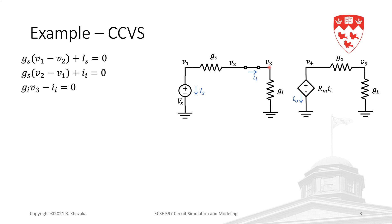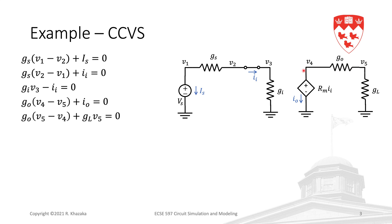At node three: the current leaving through Gi is gi×v3, plus the current leaving through the short circuit, which is −ii. At node four: go(v4−v5) plus the current leaving through the voltage source, io — we define io as the current in this controlled voltage source. At node five: go(v5−v4) plus the current leaving through gl, which is gl×v5.